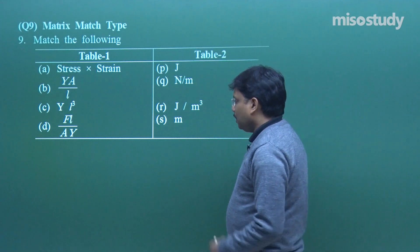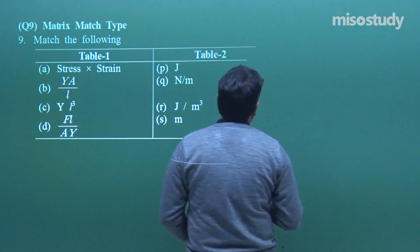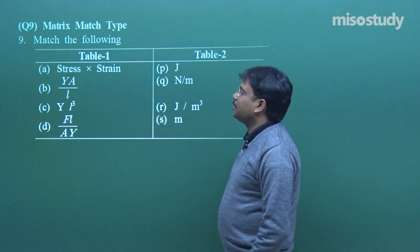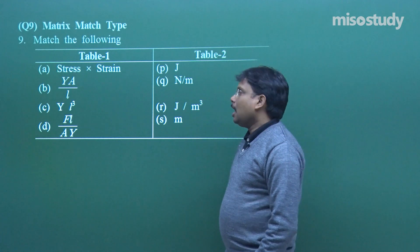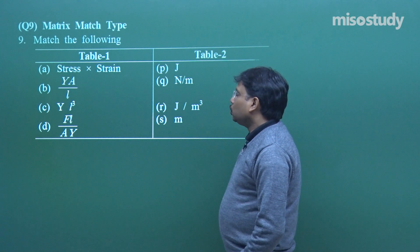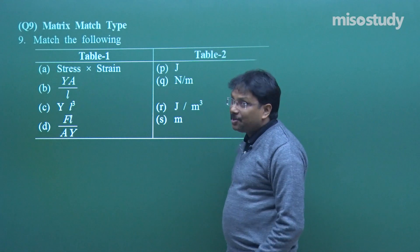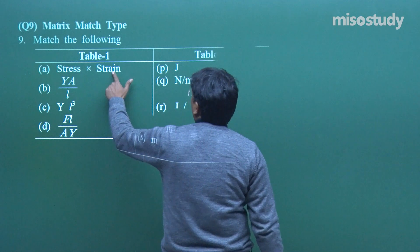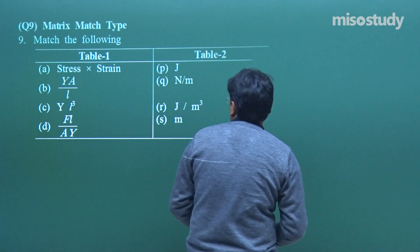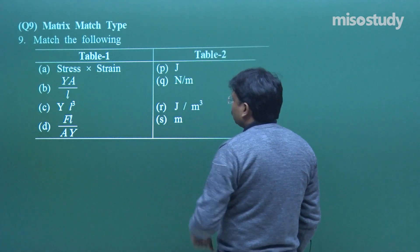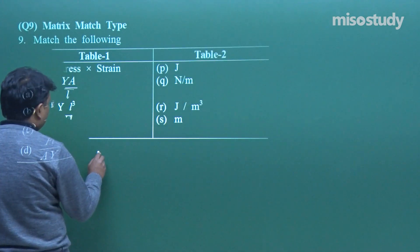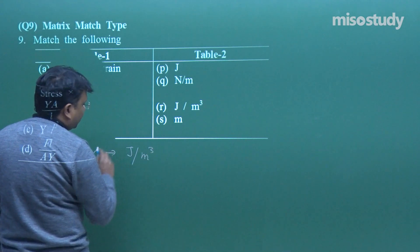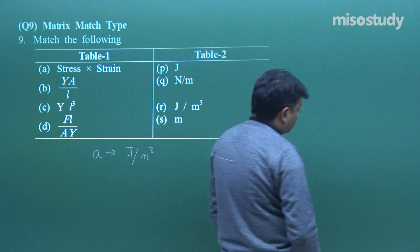If you have time, there is nothing difficult in this question - we can solve on rough paper and easily get it. Let's see it a little. For the first one - let us take stress times strain. Now for stress times strain, strain has no dimension, stress has the same dimension as pressure. So for A, joule per meter cube is correct.